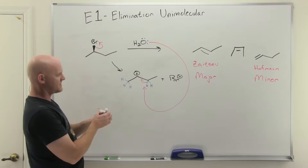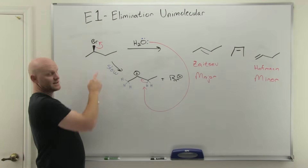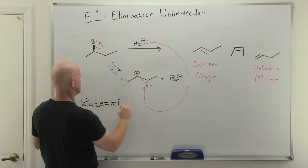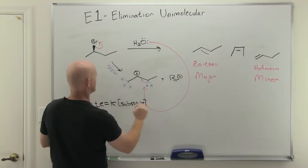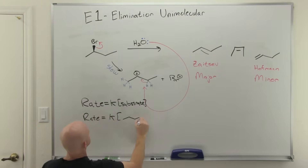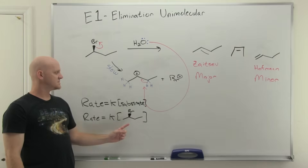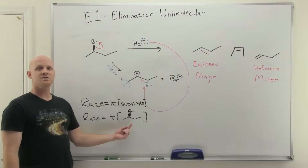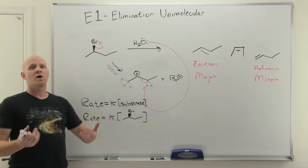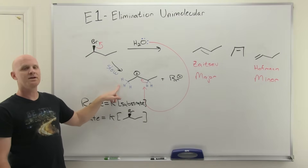The first step, just like in SN1, is our slow step or rate-determining step, and the only reactant involved is our alkyl halide — our substrate. So your rate law only has the substrate in it; the base is not involved at all. Specifically, if we write our rate law we'll have our 2-bromobutane in it. The rate is first order with respect to 2-bromobutane and first order overall — you double the concentration of 2-bromobutane, you double the rate.